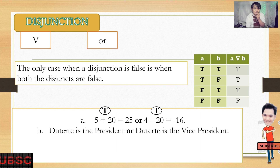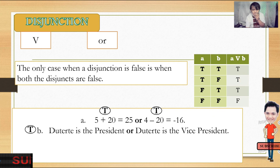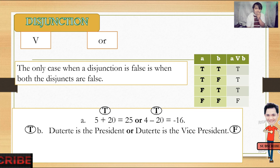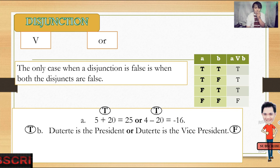Next: 'Duterte is the president or Duterte is the vice president.' Duterte is the president — that's true. Duterte is the vice president — that's false. These two statements cannot happen at the same time. You have to choose, so the truth value is true.